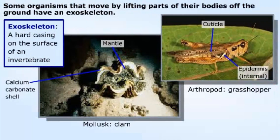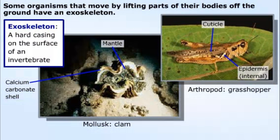Some aquatic organisms that require a solid skeleton have an exoskeleton, a hard casing on the surface of their body. A mollusk's exoskeleton is a shell composed mainly of calcium carbonate secreted from the mantle. For bivalves, like clams, the hinged shell can be closed by muscles attached to the inside of the shell.